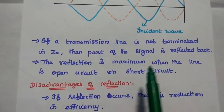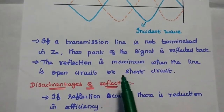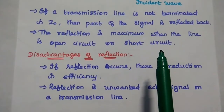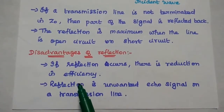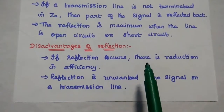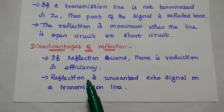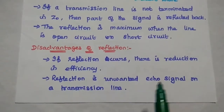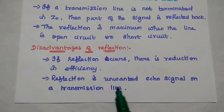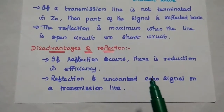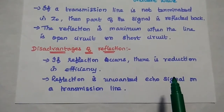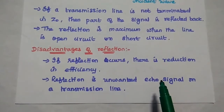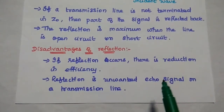The reflection is maximum when the line is open or short circuit. The major disadvantages of this reflection are: if reflection occurs, there is reduction in efficiency. Reflection is an unwanted echo signal on a transmission line. So we have to reduce this reflection by matching the receiving end impedance with the characteristics impedance. For that, we can use impedance matching techniques.